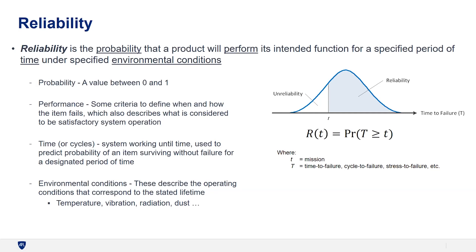The graph dictates what that reliability looks like when you have a distribution for the failure time. This jumps into the math of how things get put together. Notice that this is a probability of time to failure — this then starts to talk about how do I model the system or the physics involved that gets me to this time of failure.